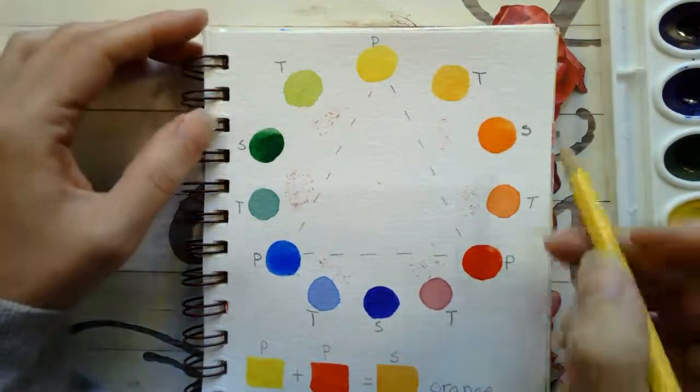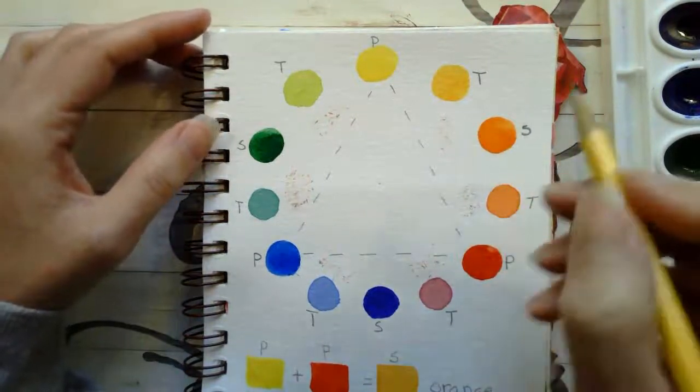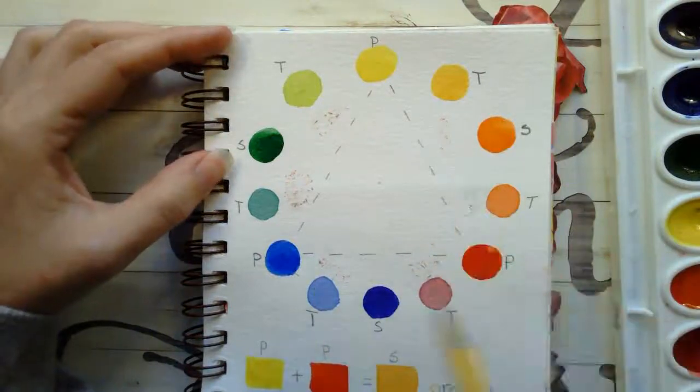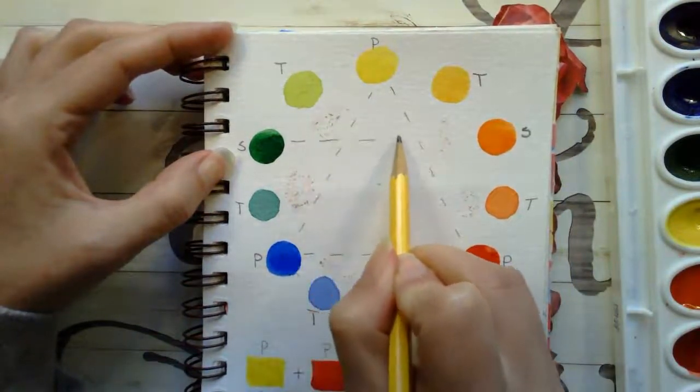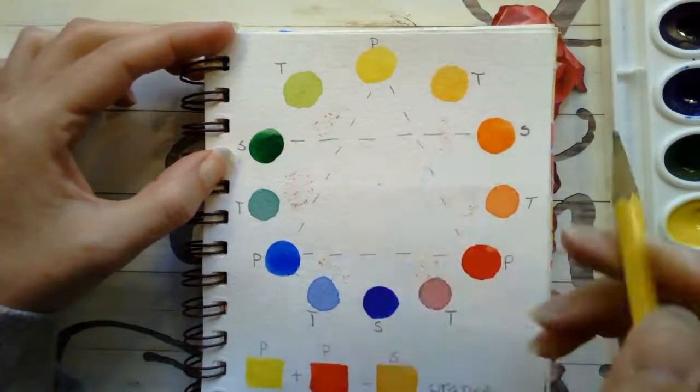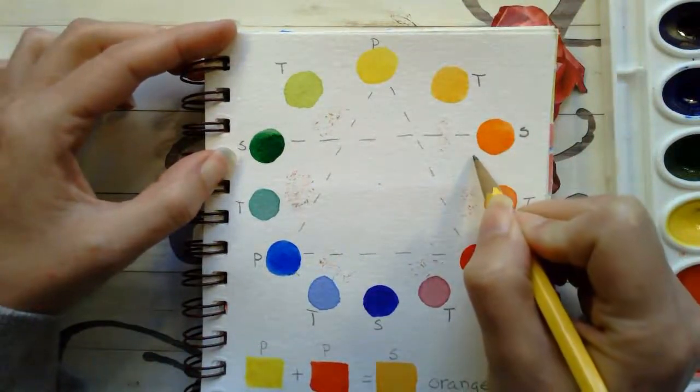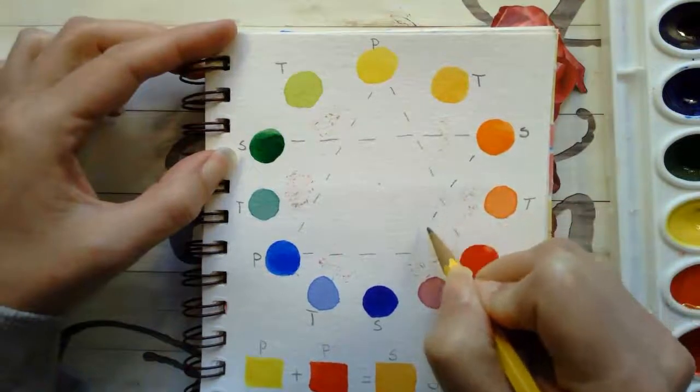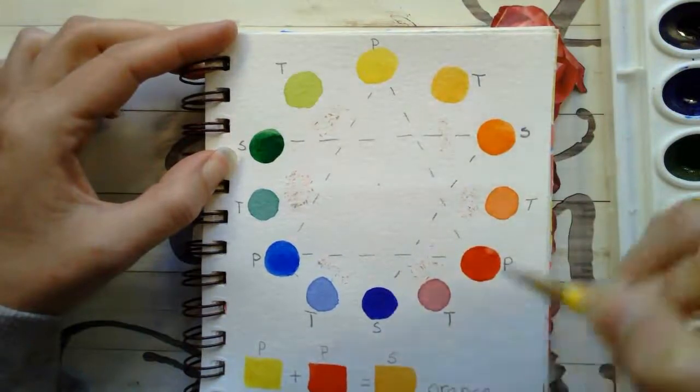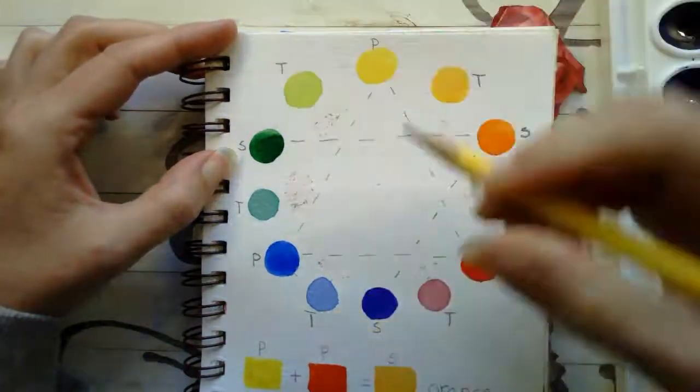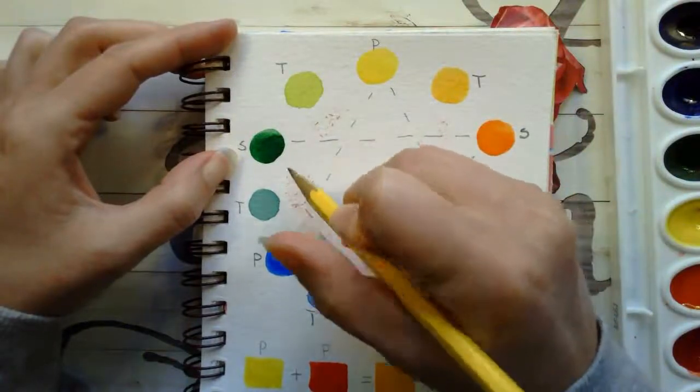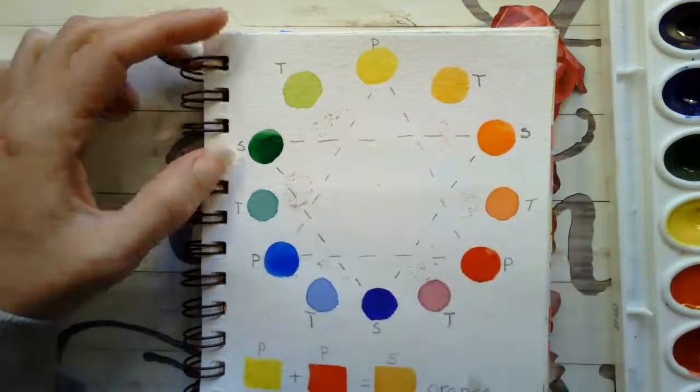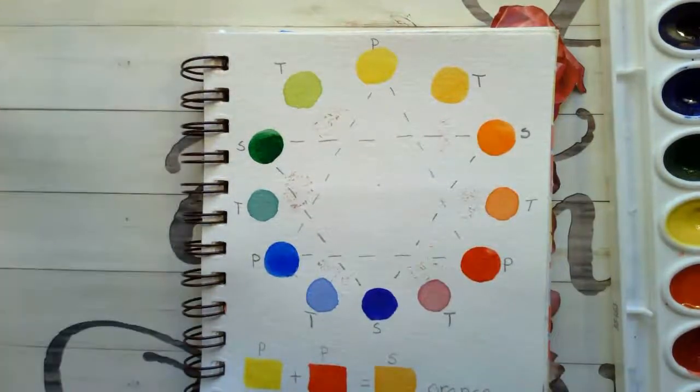Now we're going to do the same thing with our secondary colors. We're going to come here. I'm going to connect the dashed or dotted line. Green to orange. Orange to violet. And violet to green. Okay.